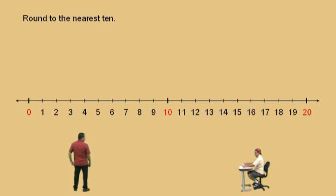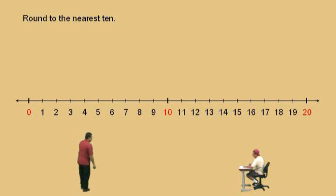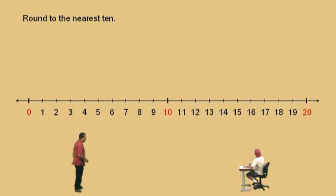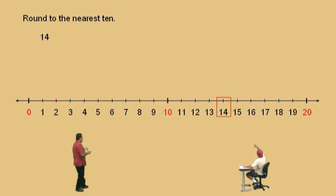So let's start with this number line here. Notice it's labeled from 0 to 20 — that's our scale — and the tens are labeled in red: 0, 10, and 20. Note that 0 does count as a 10. We're only going to be rounding positive numbers in this video. So here we go, Charlie — round to the nearest 10. On a number line, we'll start with 14. Notice the 14 is boxed there in red. Which 10 is it closer to, Charlie — the 10 or the 20?